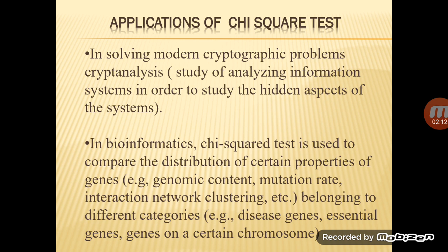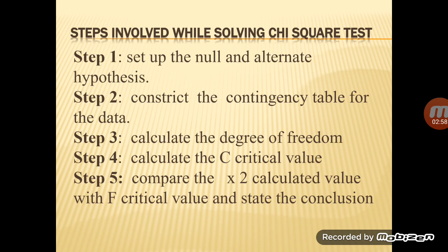Cryptography relates to coding formulas, mixing, dividing, and distributing data. In bioinformatics, certain gene properties are widely distributed across categories — such as various disease-related genes or genes on different chromosomes. To study genes by placing them into separate categories, the chi-square test is helpful.